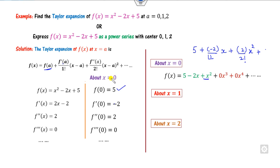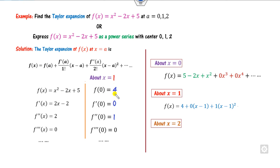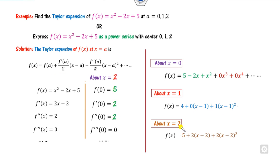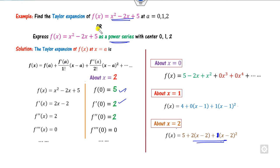For center x = 1, find the derivatives at x = 1 and substitute those values to get the coefficients. Similarly about x = 2, find the derivatives at x = 2 and substitute to get the required coefficients. This is the way you can express any polynomial as a power series using Taylor expansion.